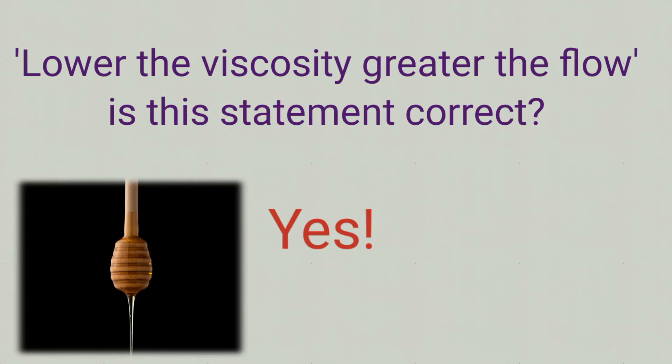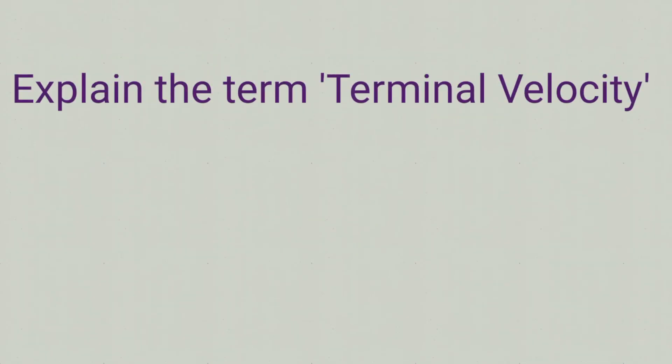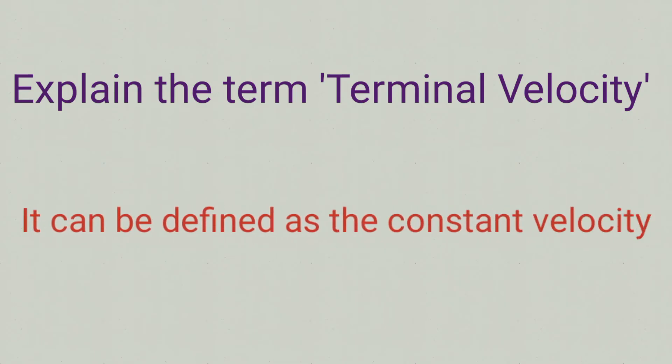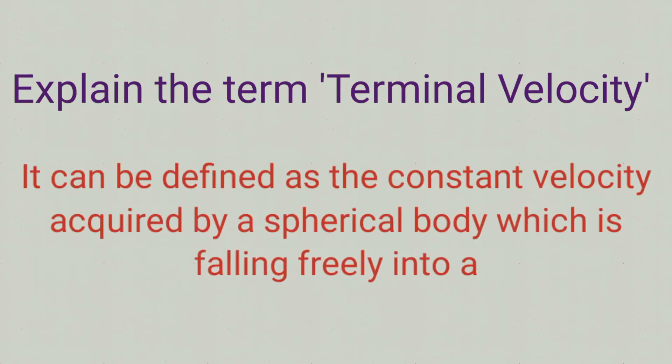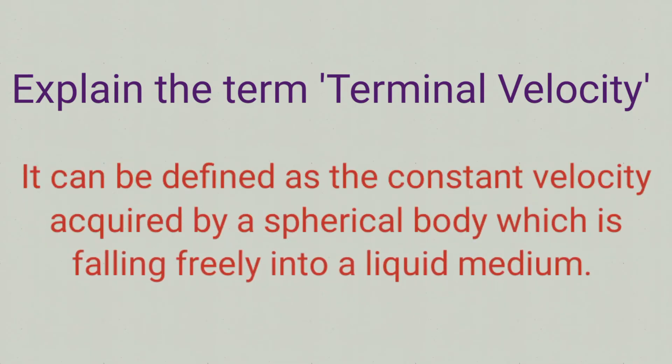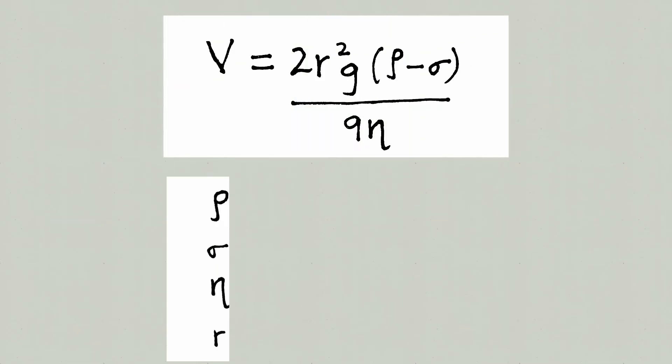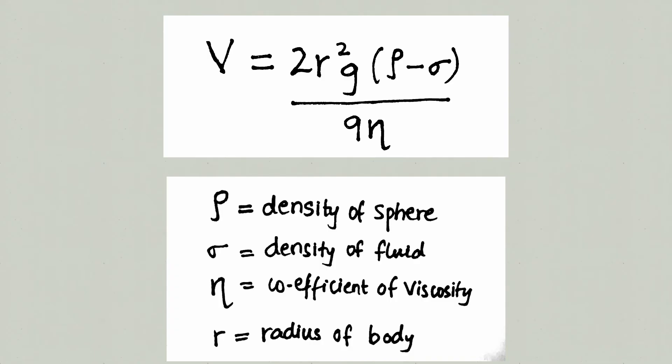Explain the term terminal velocity. It can be defined as the constant velocity acquired by a spherical body which is falling freely into a liquid medium. Terminal velocity can be expressed by this formula.